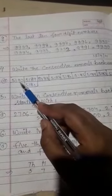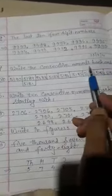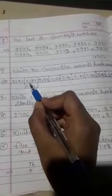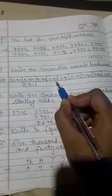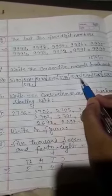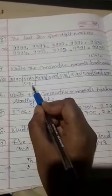5190. Write the consecutive numerals backward: 5190, 5189, 5188, 5187, 5186, 5185, 5184, 5183, 5182, 5181. Backward consecutive numerals.